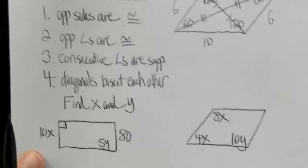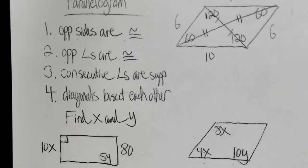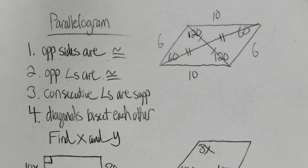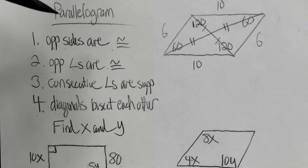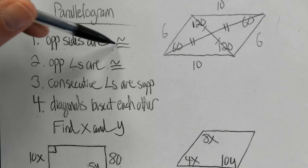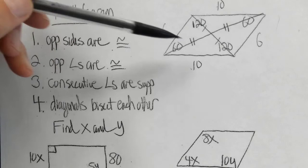The next part of the lesson focuses specifically on the properties of a parallelogram. There are four properties we need to know. Number one: in a parallelogram, the opposite sides are congruent. So if the top side is 10, the bottom side has to be 10; if the left is 6, the right has to be 6. The opposite sides are congruent — that's the first property.